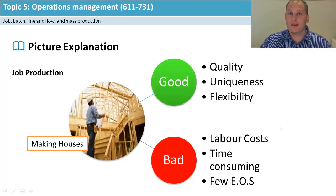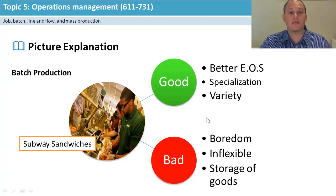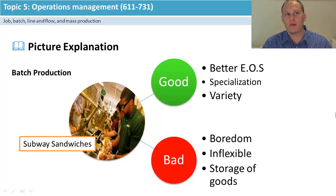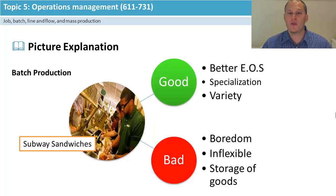You use job production when you want uniqueness and quality, usually linked to a really strong brand. Moving on to batch production — think of Subway sandwiches. I'm a meatball fan personally — give me the palms and oregano, bit of mayonnaise, salt and pepper, lettuce, onions, maybe some tomato. Good sandwich.